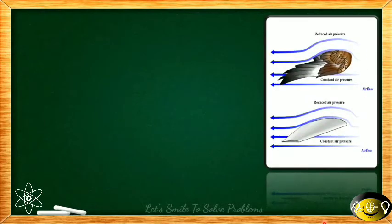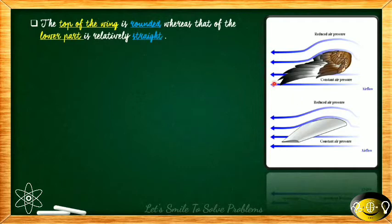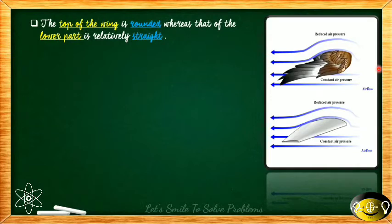Looking at the airfoil shape in detail: the first point is that the top of the wing is rounded whereas the lower part is relatively straight. You can see in the picture that the upper portion of the wing is comparatively rounded while the lower portion is not as rounded. This applies to both the aircraft and the bird — the upper portion is rounded and the lower portion is straight.